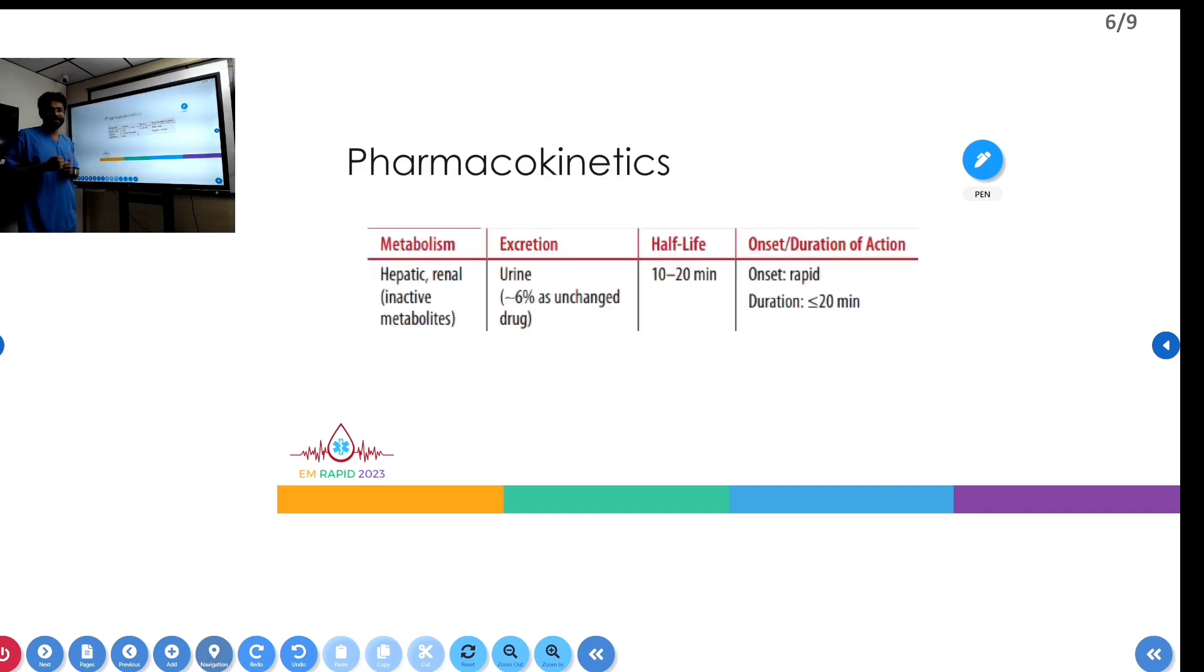Vasopressin is metabolized in the kidneys and liver and excreted through the kidneys. Its half-life is about 10 to 20 minutes, with rapid onset of action and duration less than 20 minutes.